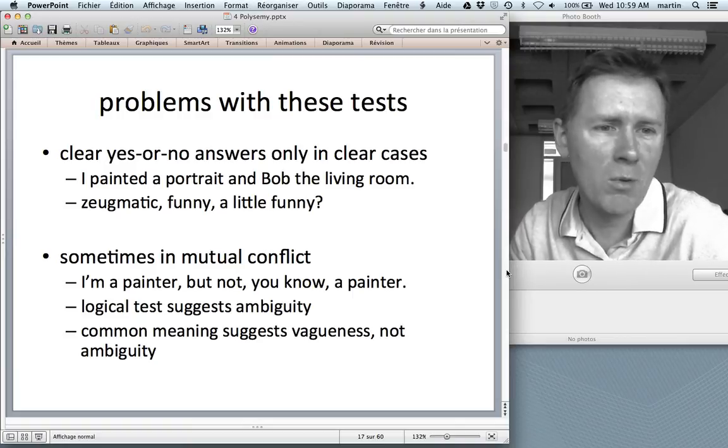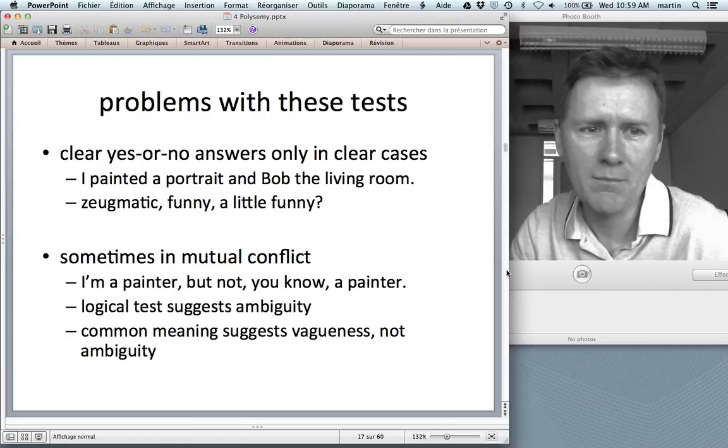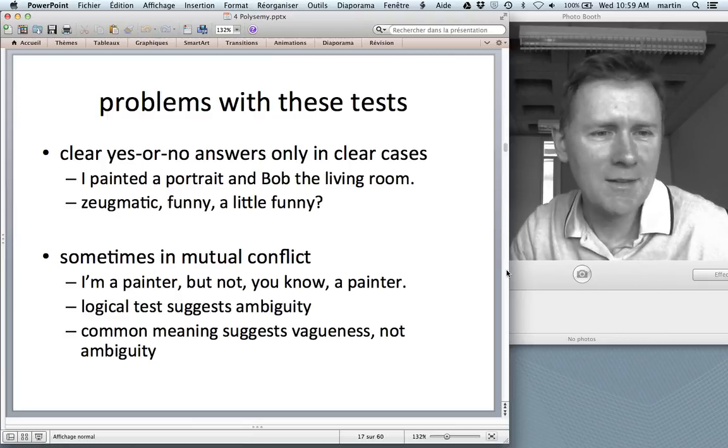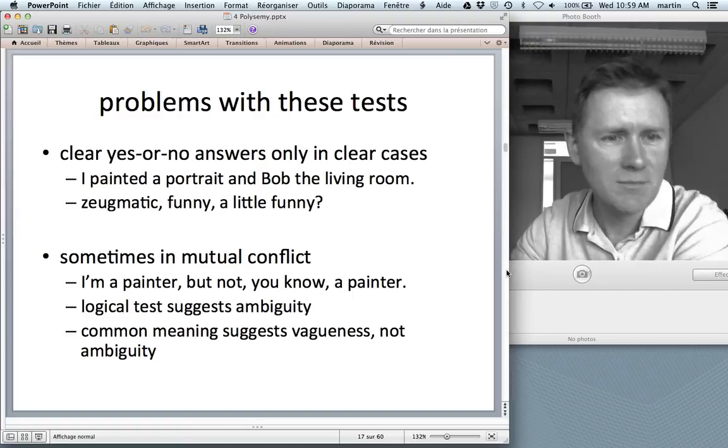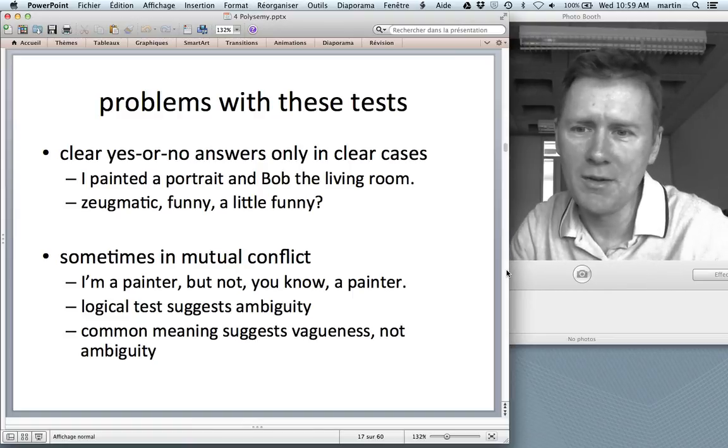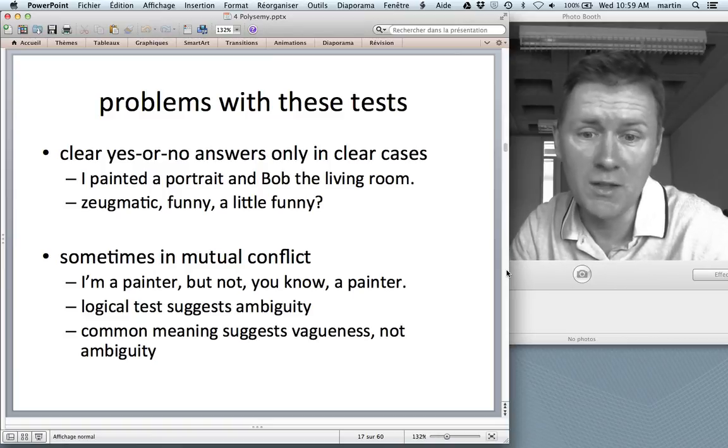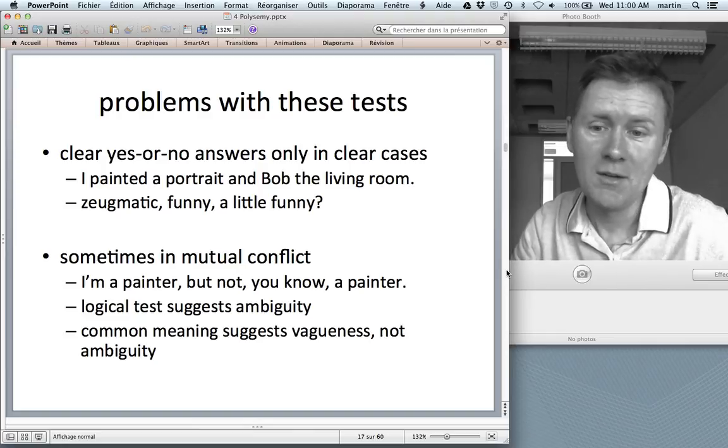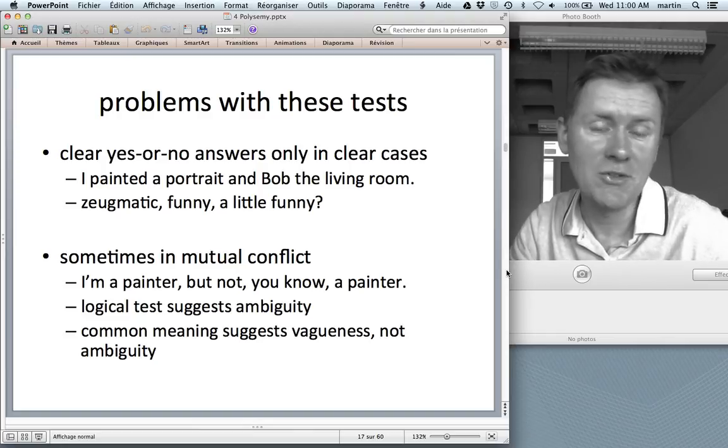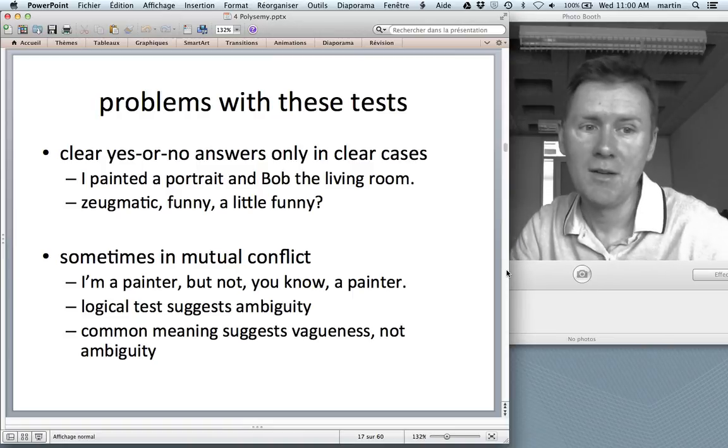Some people might say, well, I lost my wallet in Argentina, the World Cup final. It's totally fine. So it seems that these tests don't give us the last answer to the distinction between ambiguity and polysemy, on the other hand. And sometimes the tests are even in mutual conflict. So I can say I'm a painter, but not a painter. So that the logical test suggests ambiguity, but the common meaning suggests vagueness and not ambiguity.